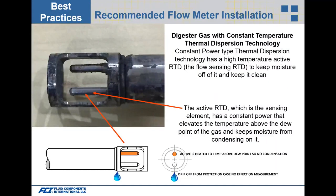There are two types of thermal dispersion technology: constant temperature and constant power. Constant temperature tends to have issues with biogas and digester gas because biogas is wet and contains debris. Constant power technology is highly recommended because it elevates the temperature of the active sensing element above the dew point of the gas, preventing moisture from collecting on it — and moisture is what attracts debris, so keeping it dry ensures accurate flow readings.